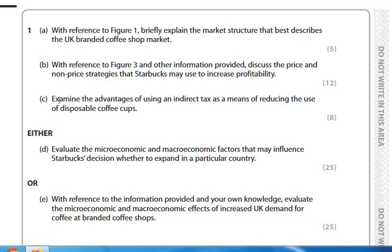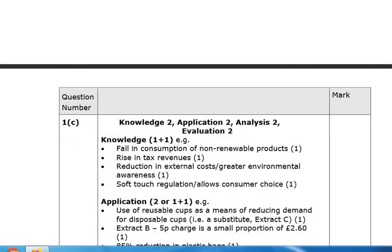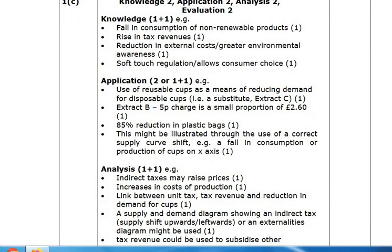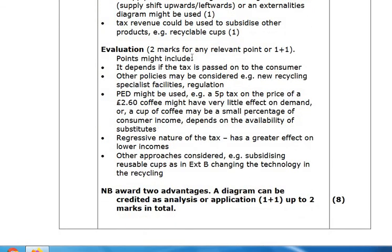The next question is an 8-mark examine question. There are going to be two KAA themes worth three marks each — that's six marks — and then two evaluation marks. For each KAA theme: you state a relevant knowledge point, apply it, analyse it — that's three marks. Do the same again for your second theme. Then a bit of evaluation: you can either explain one idea for two evaluation marks, or give two throwaway bits of generic evaluation.